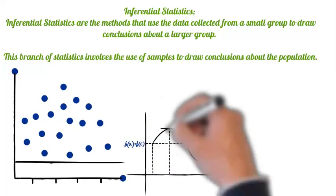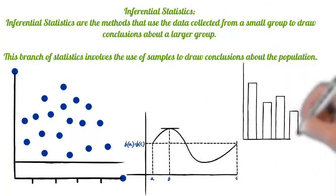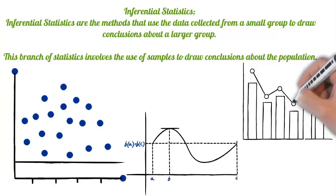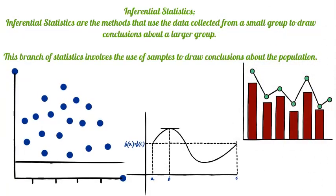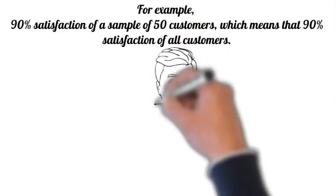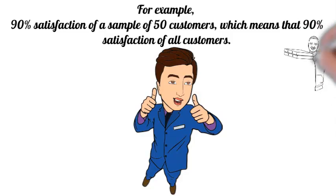This branch of statistics involves the use of samples to draw conclusions about the whole population. For example, 90% of the sample of 50 customers, which means that 90% satisfaction of all the customers in the market can be shown and calculated through inferential statistics.